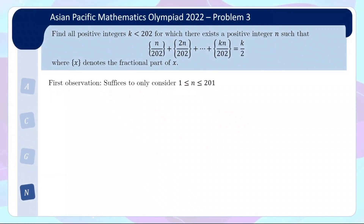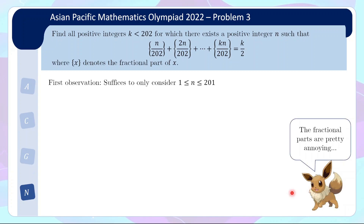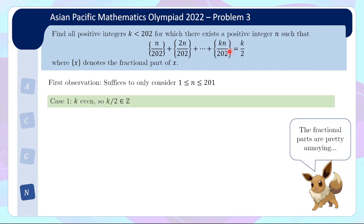That's a short detour to the visual depiction of the equation. Now let us try and solve this problem. Working with the fractional part is actually pretty annoying — it doesn't let you add things easily. So imagine if we can do away with the fractional parts; then it will be just a very simple arithmetic sum. To do that, let us first break into two cases. First we consider the case where k is even.